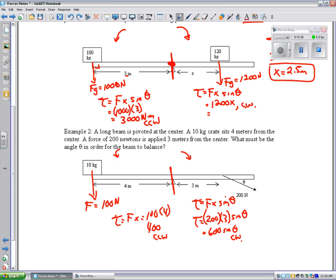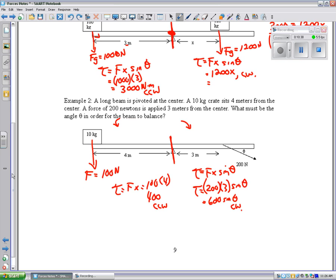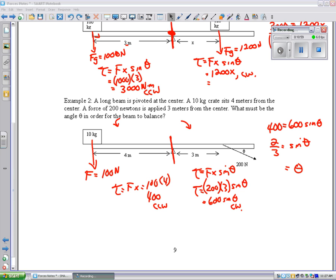I set my counterclockwise equal to my clockwise, and I get 400 equals 600 sine of theta. So, when I solve this, if I divide by 600, 400 divided by 600 is 2/3 equals sine of theta. So, then theta is going to be 41.8 degrees.